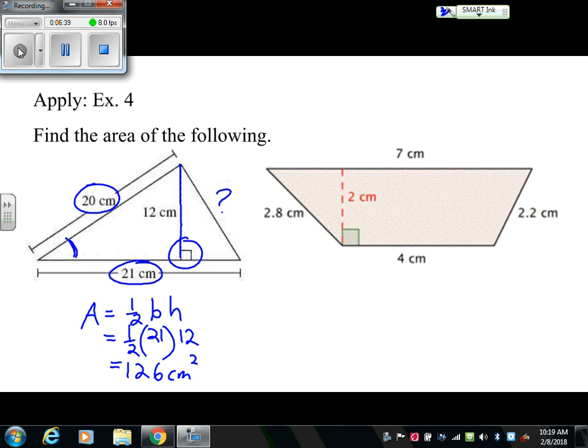And that gives us an overall area of 126 square centimeters or centimeters squared for the area of this triangle. Under our next example, we've got a trapezium or trapezoid. I know that because I can see that the top and the bottom bases are parallel to each other, meaning it has two bases.